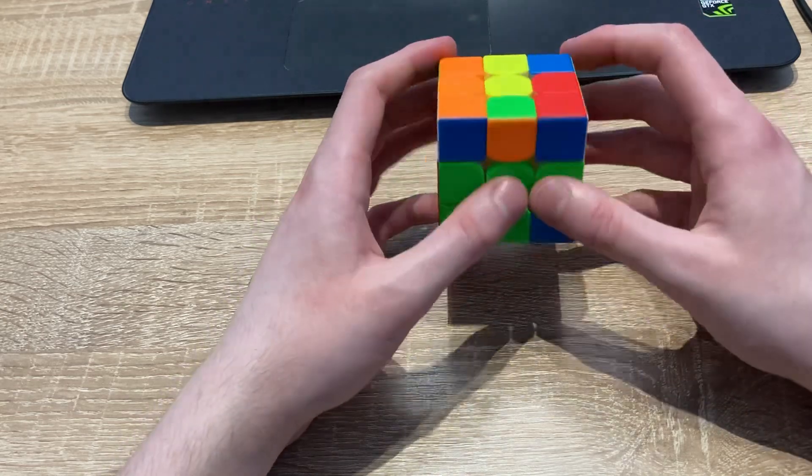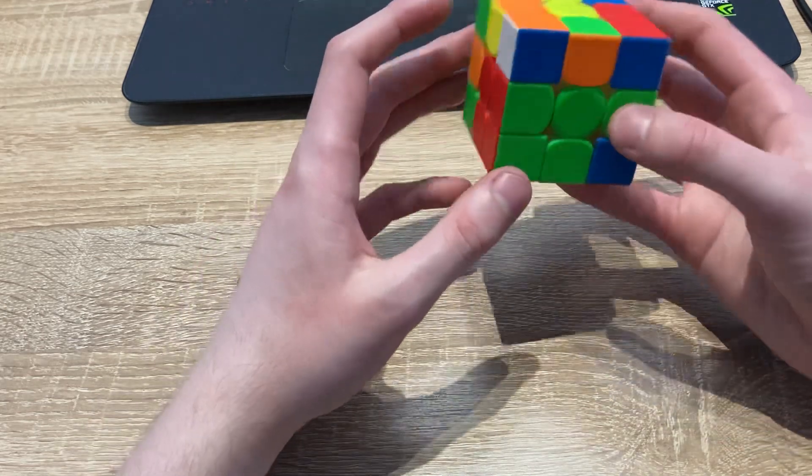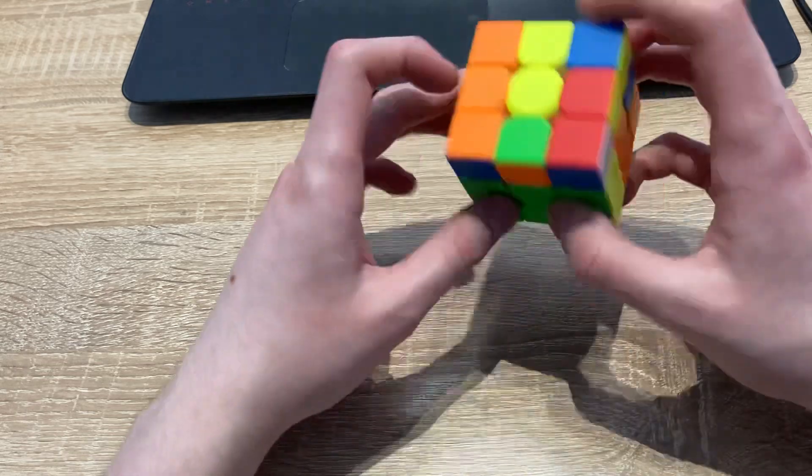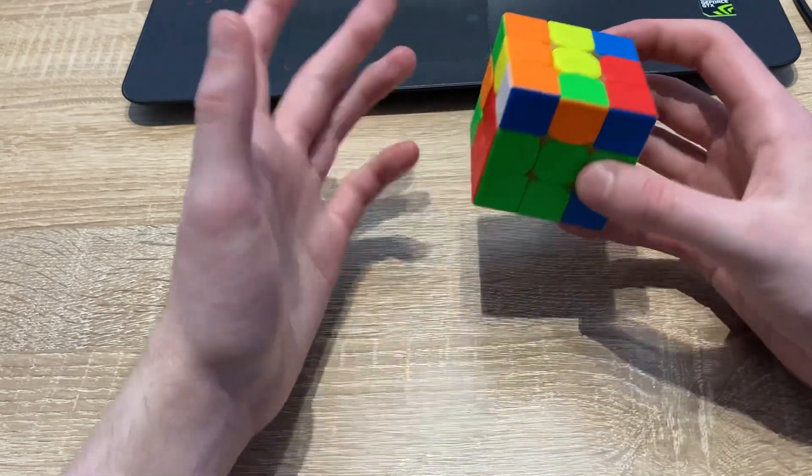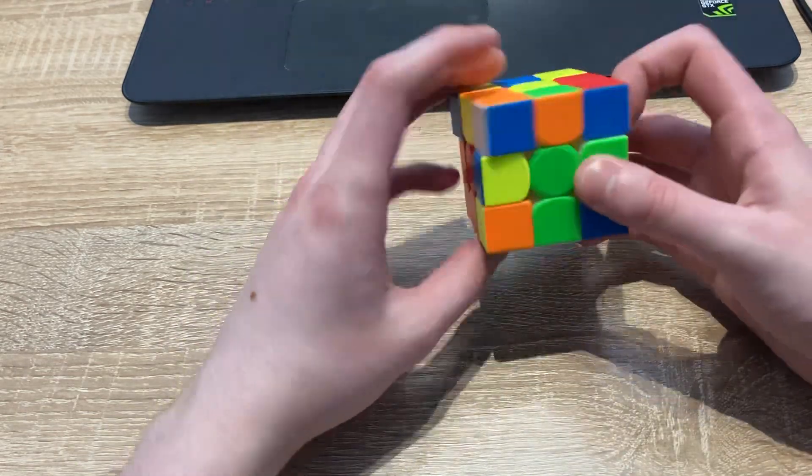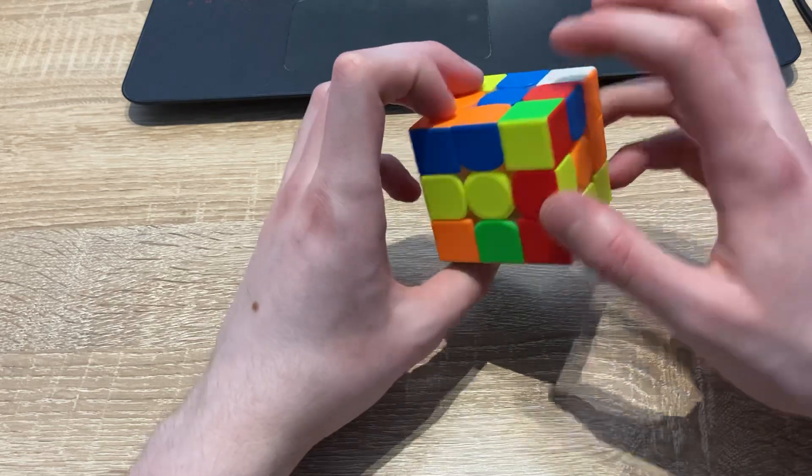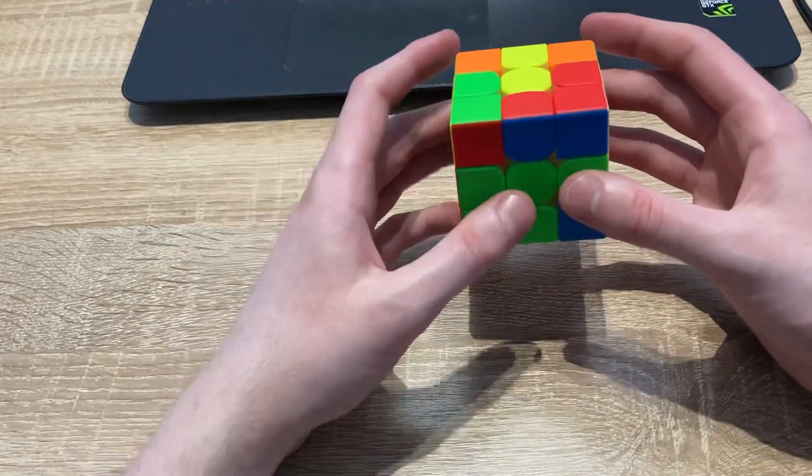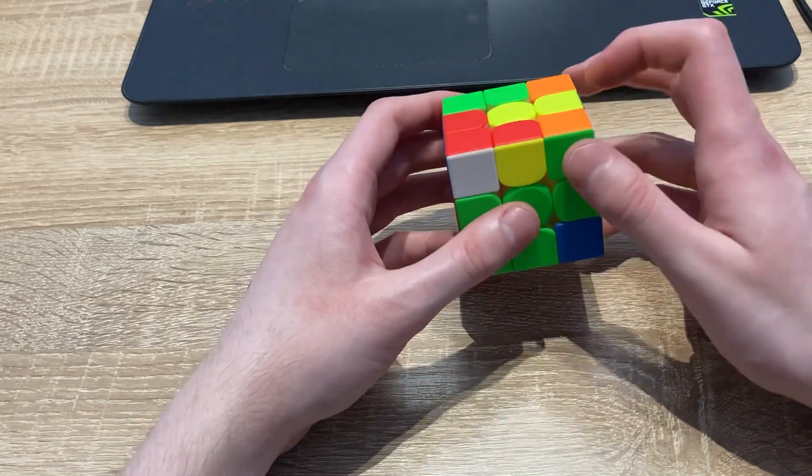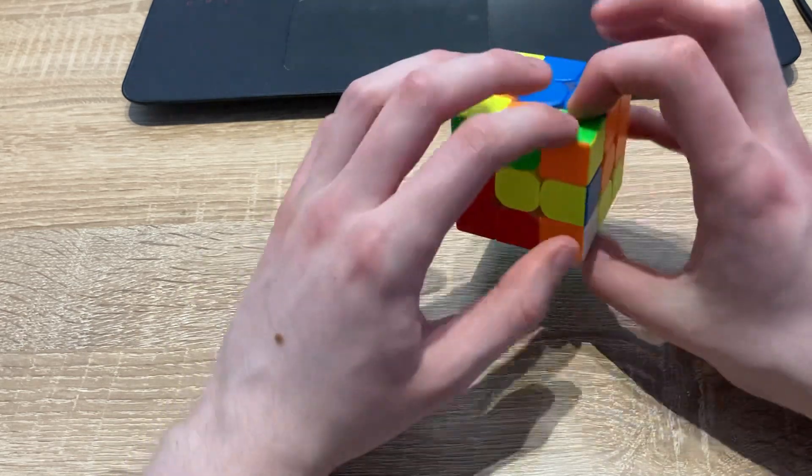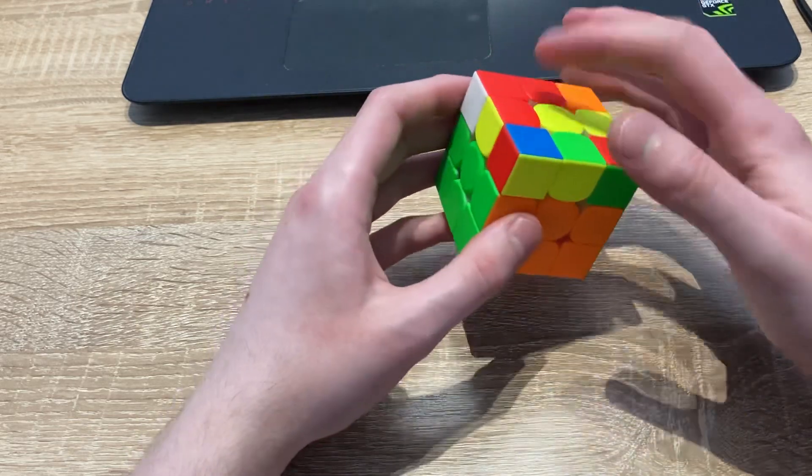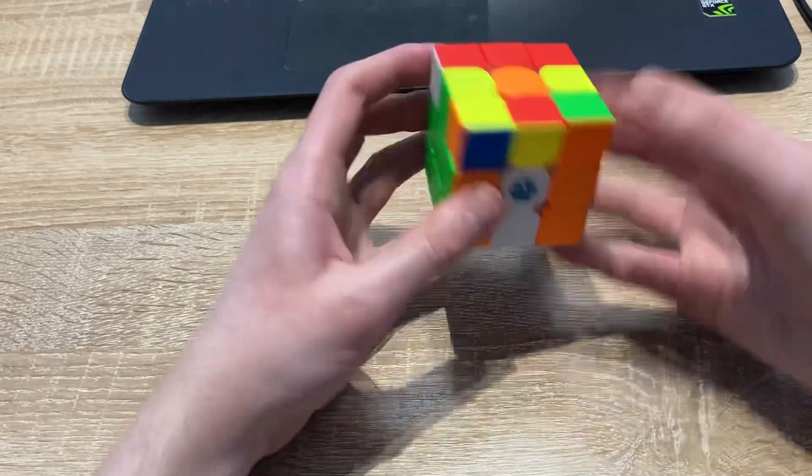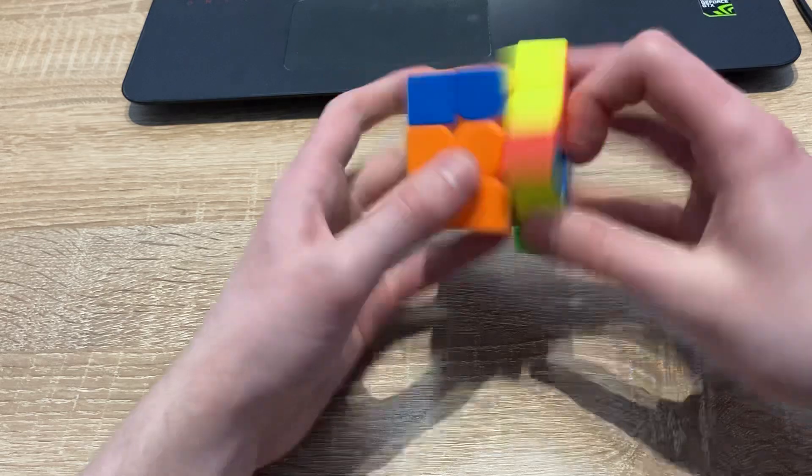And the next pair, I can either solve this one or this one. I would prefer the blue and orange one, just because it sets up this one as well. And in this case, I'm a bit lucky because again, I can do a multi-slot in case. So I do this F-move remover, which gives this one an F-move remover. Now I just do OLL and J-perm.